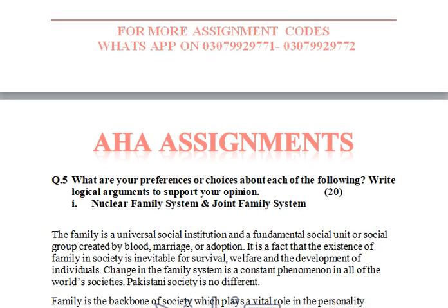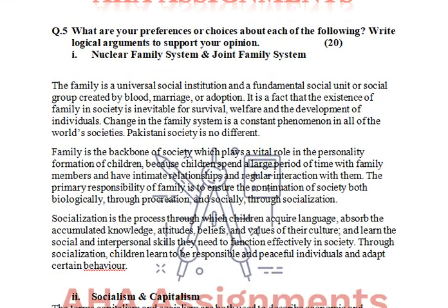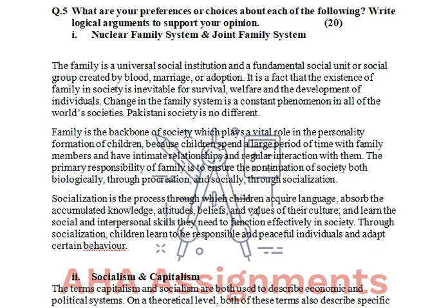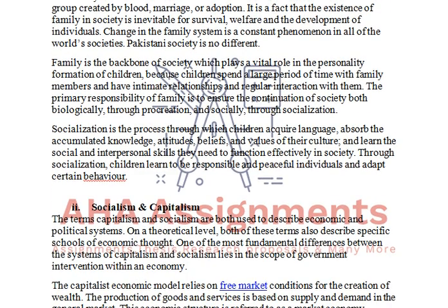Moving to Question 5: what are your preferences or choices about each of the following? Write logical arguments to support your opinion. You have two different categories — you have to select one and tell your preferences. For example, the Nuclear Family System — just husband, wife, and kids — or the Joint Family System — grandfather, grandmother, all included. Now you have to support either the nuclear family system or the joint family system.